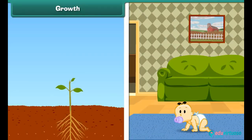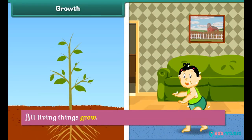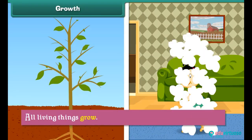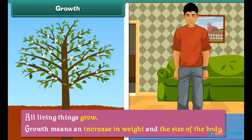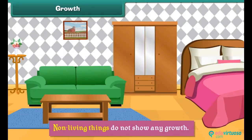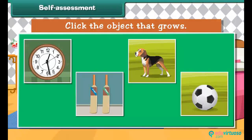Growth. All living things grow. Growth means an increase in weight and the size of the body. Non-living things do not show any growth. Let us know how much you have learned — click the object that grows.